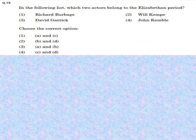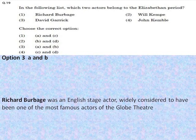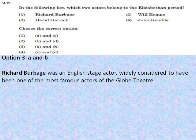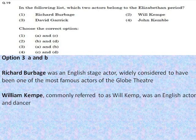The next question asks which two actors belong to the Elizabethan period: Richard Burbage, Will Kempe, David Garrick, or John Campbell? The correct option is number 3 — A and B, Richard Burbage and William Kempe. Richard Burbage was an English stage actor widely considered one of the most famous actors of the Globe Theatre, which belonged to Shakespeare, and was the younger brother of Cuthbert Burbage. William Kempe was an English actor and dancer specialising in comic roles, best known as one of the original players in Shakespeare's early dramas.